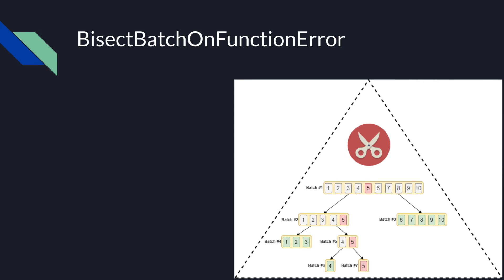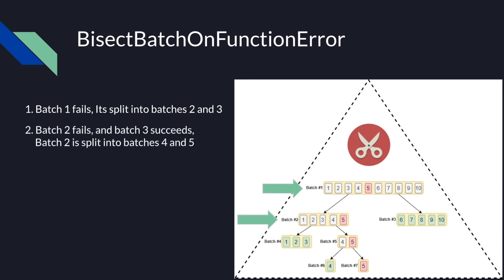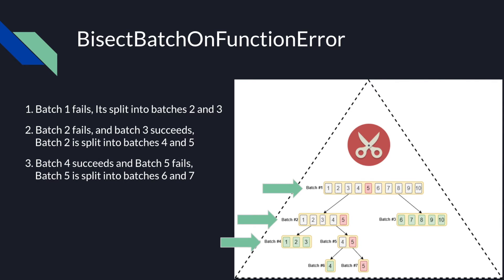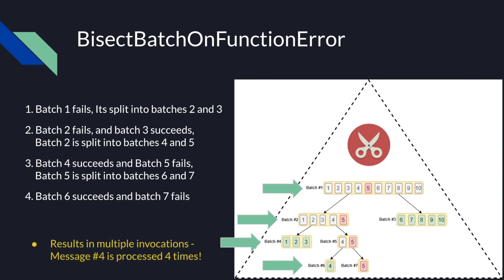Let's understand how this configuration works by looking at an example. In a batch of 10 messages where item number 5 is failing, the processing occurs as follows. Batch 1 fails and is split into batches 2 and 3. Batch 2 fails and batch 3 succeeds. Batch 2 is split into batches 4 and 5. Batch 4 succeeds and batch 5 fails. Batch 5 is split into batches 6 and 7. Batch 6 succeeds and batch 7 fails. While this provides a way to process messages in a batch with one failing message, it results in multiple invocations of the function with the same record. In this example, message number 4 is processed four times before succeeding.